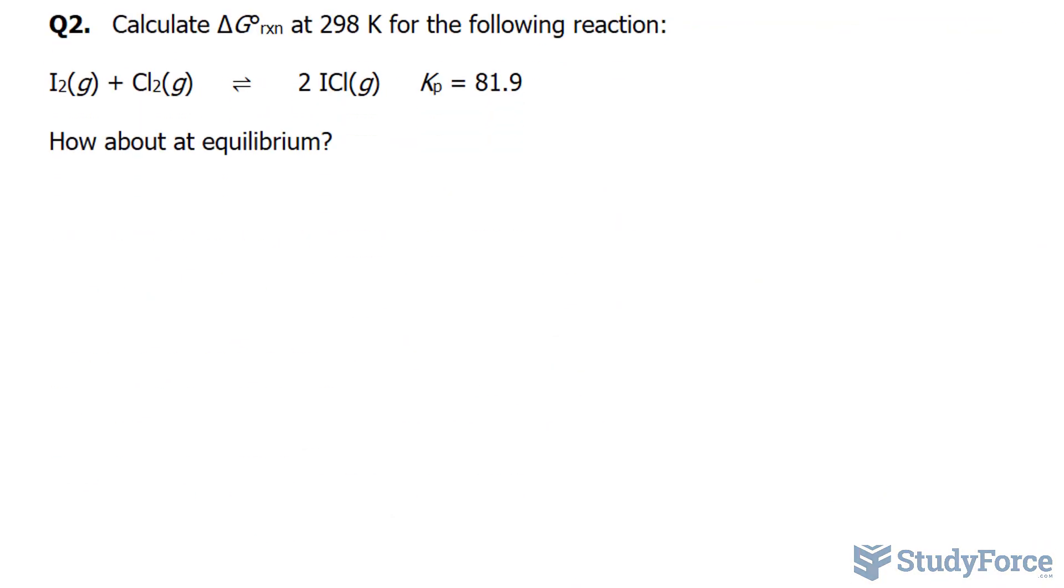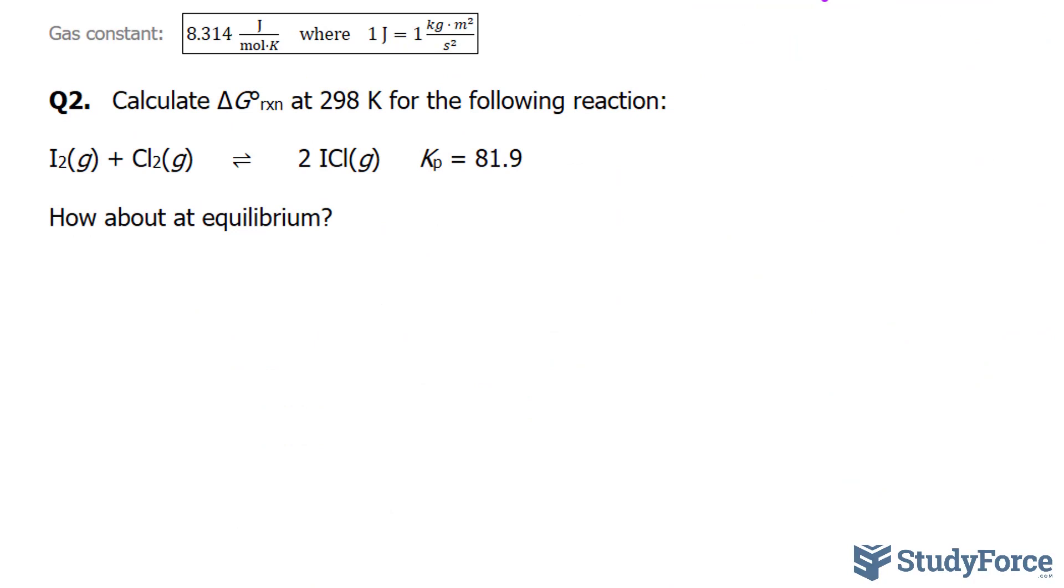Let's move on to question two. Calculate delta G for the reaction at standard conditions when the temperature is 298 for the following reaction. What is delta G at equilibrium?